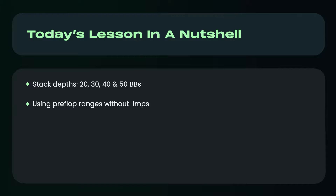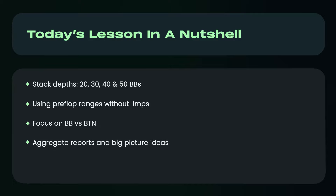If you include the limping ranges, there's going to be a lot of specific combos that want to limp, so they're going to be missing from the range. It's not the best way to try to find patterns if we have to keep that in mind throughout. I was planning to do different position pairs, but I realized it's going to be too much content. So if there's interest in that in the future, I can extend the series to include different position pairs as well. For today, I'll focus on big blind versus button since this is the most frequently played spot. I'll do some aggregate report work and look at overarching themes and big picture ideas.